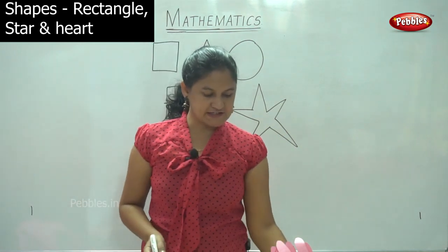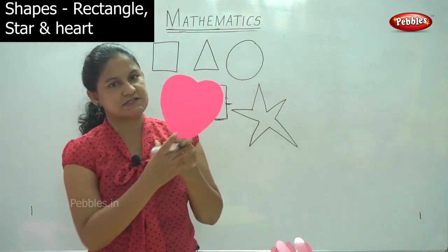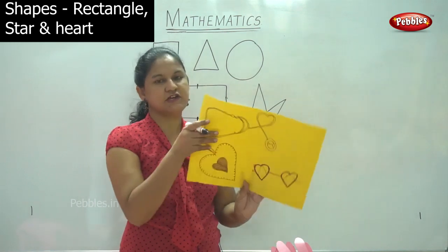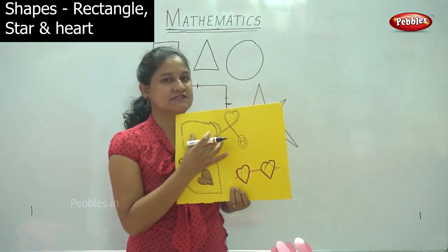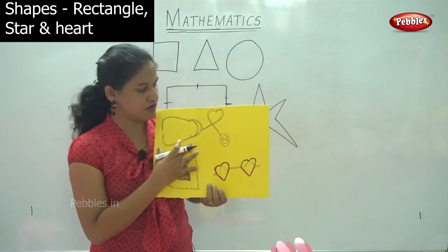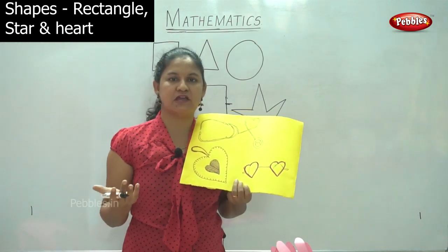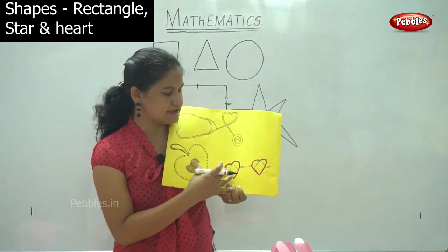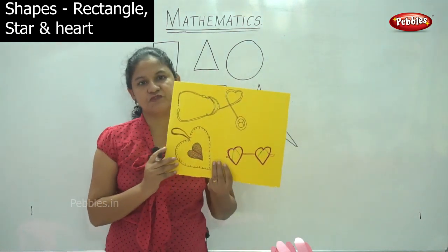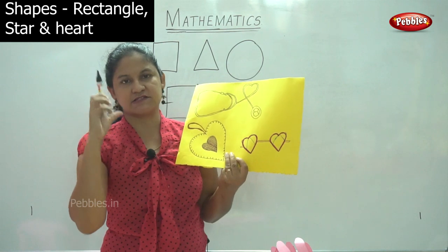Next we will move on to the next shape which we all love — it symbolizes love. This is your heart. We are going to see some examples of the heart. Here we have the stethoscope used by doctors, which is in the shape of a heart. Then we have pillows and small cushions which can be in the shape of a heart. And we have sunglasses or glares that we use which are in the shape of a heart. So these are the shapes of a heart: the stethoscope, the pillow and cushions, and the sunglasses.